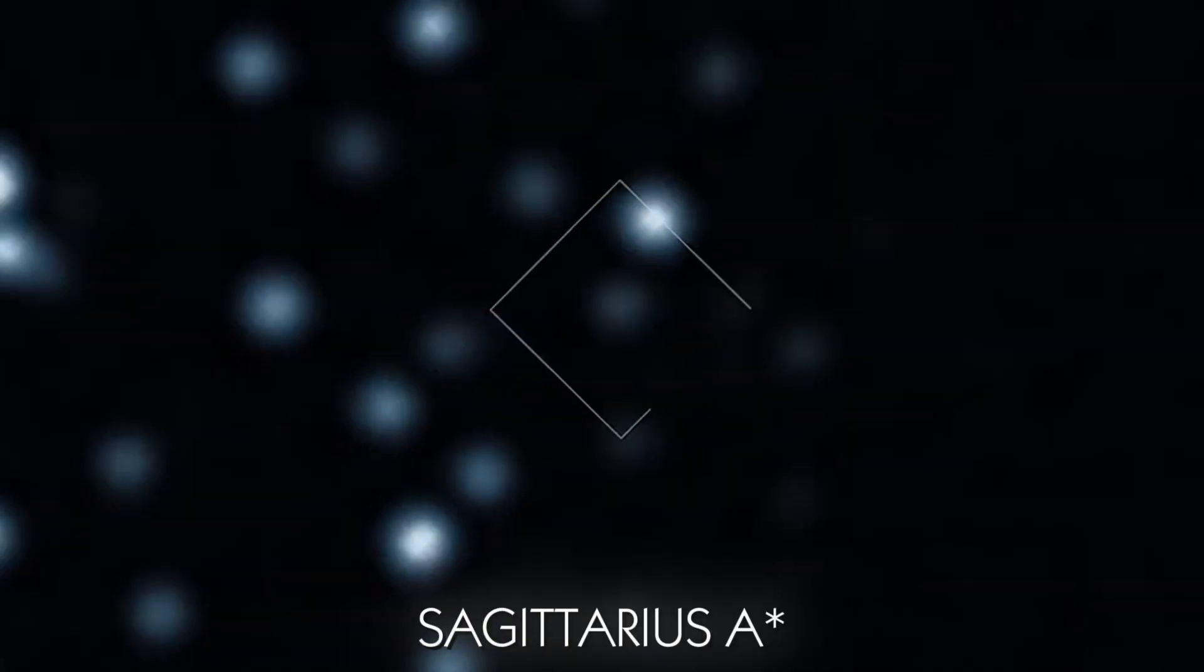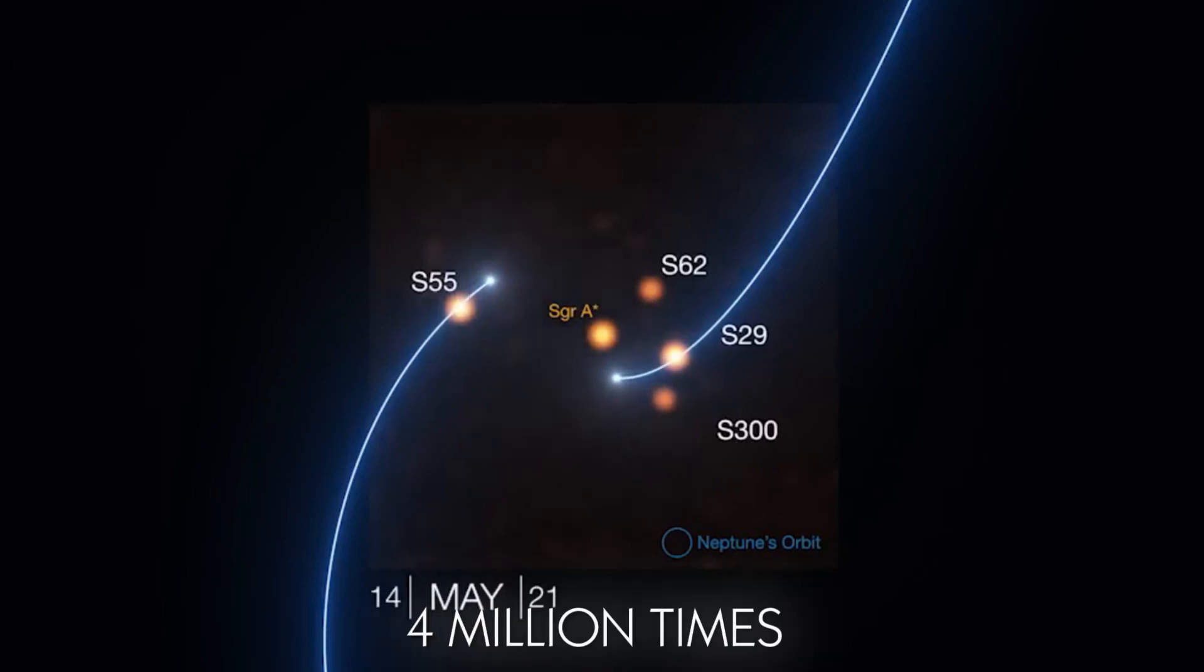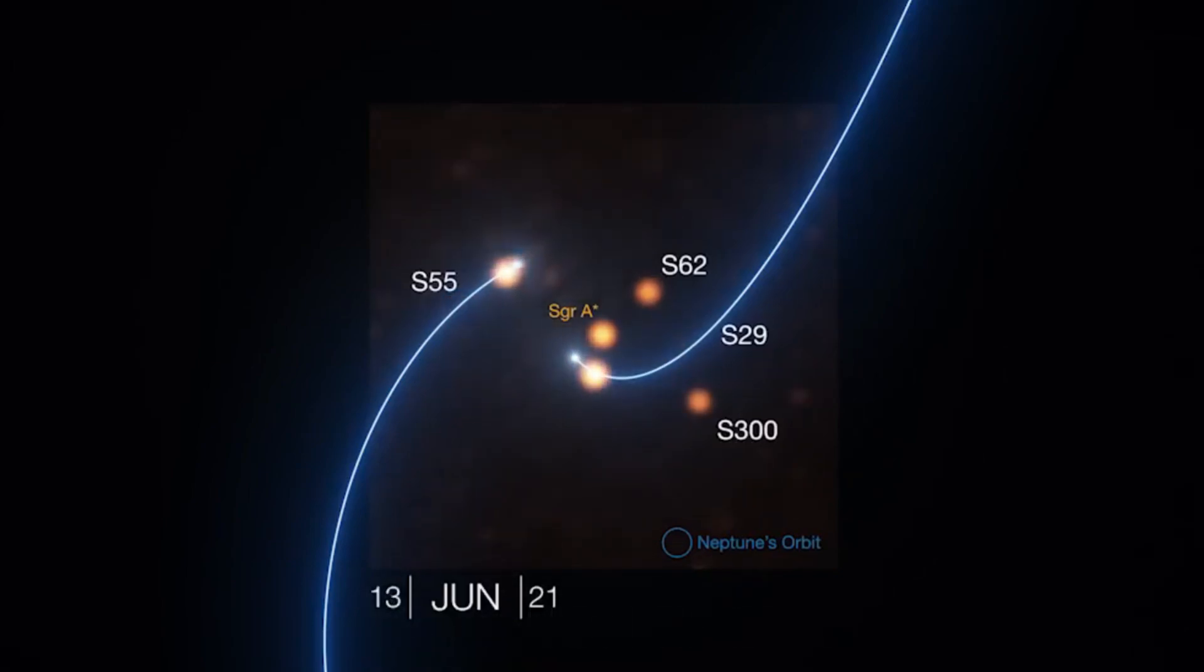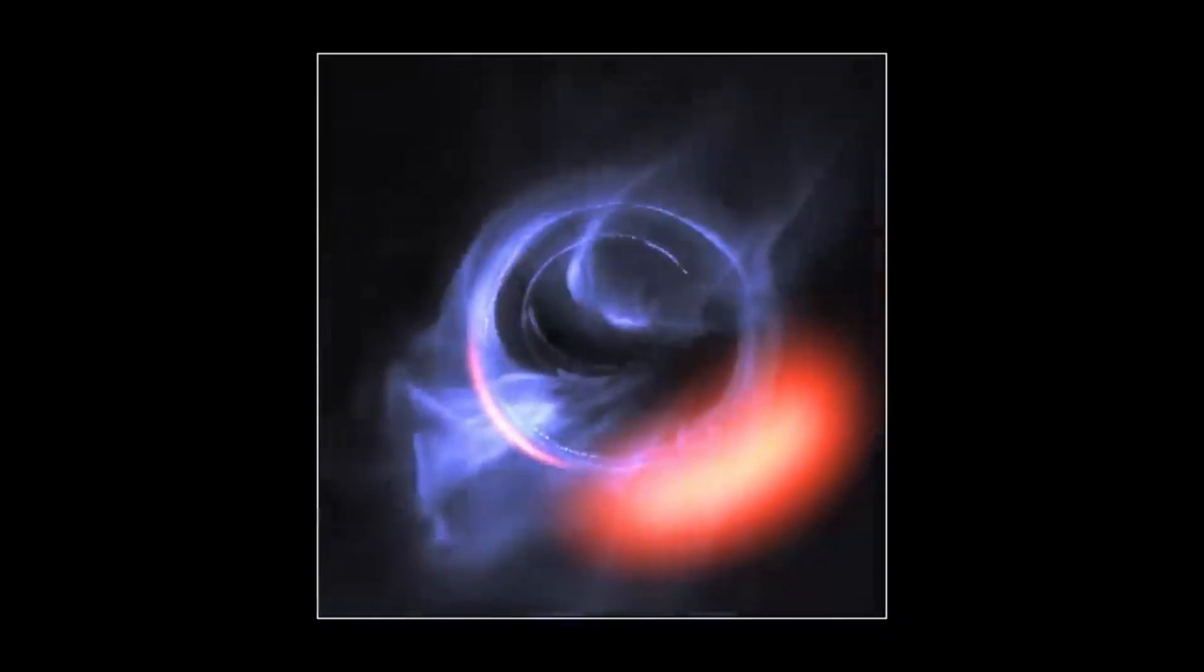Does that make Gaia BH3 the largest black hole in our galaxy? No. The most massive black hole in our galaxy is Sagittarius A-star, located at the Milky Way's center. This black hole has a mass about four million times that of the sun. The reason why it holds the title of being the largest is because it's a supermassive black hole, not a stellar black hole.